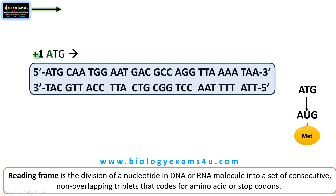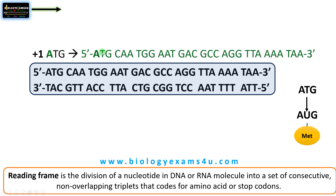The plus one frame begins with the first nucleotide A, giving triplets ATG, CAA, TGG, and so on. This ATG upon transcription codes for AUG — the start codon — which codes for the first amino acid methionine. Similarly, TAA upon transcription becomes UAA, which is the stop codon. So this is frame one, or the plus one frame.